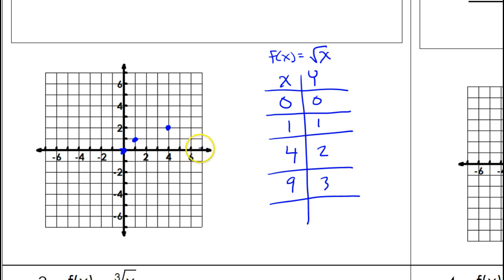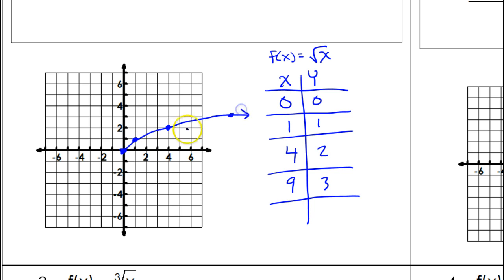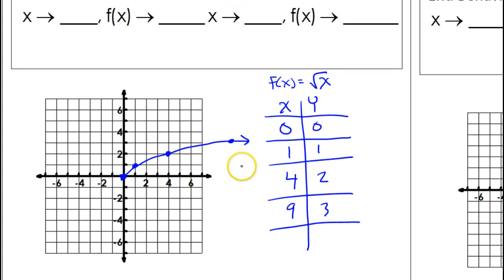I'm going to estimate where 9,3 falls — about here. Knowing that we don't have any negative x values, this is the starting point and the curve is only going to go in one direction. So that is your classic square root of x function. This is the parent function for all of the other functions we're going to look at today.